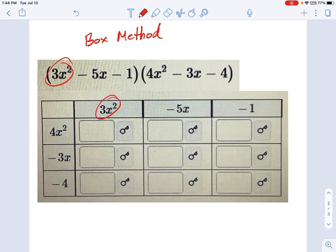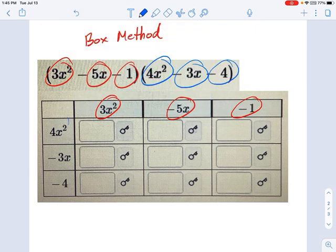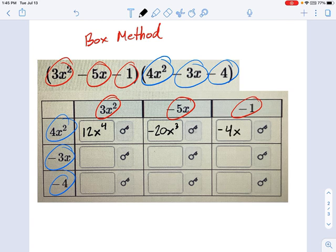If you look at what I've done here, I've taken 3x squared, negative 5x, and negative 1 and put those here. And the other terms of the other polynomial, 4x squared, negative 3x, and negative 4 are all down here. And the way we're going to track this multiplication is by just carrying through one term at a time. So 3x squared times 4x squared makes 12x to the fourth. Negative 5x times 4x squared makes negative 20x cubed. Negative 1 times 4x squared is negative 4x squared.